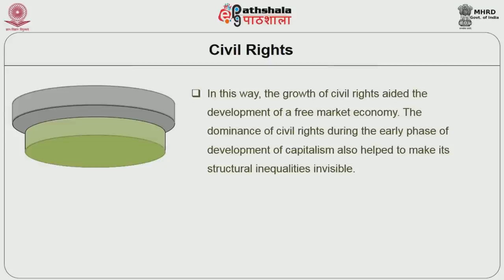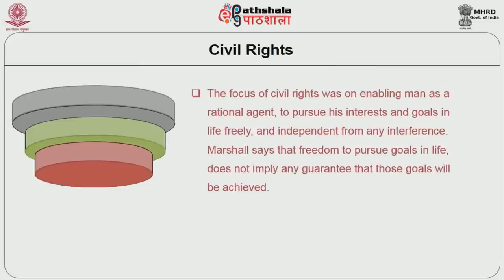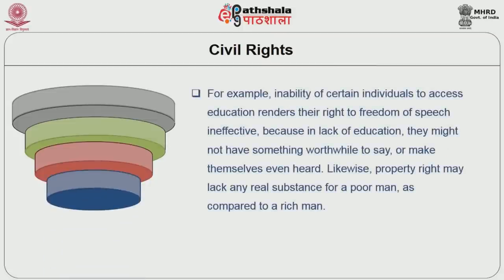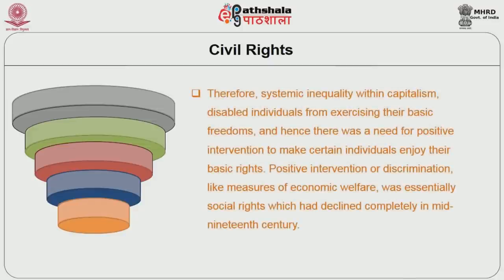In this way, the growth of civil rights aided the development of a free market economy. The dominance of civil rights during the early phase of development of capitalism also helped to make its structural inequalities invisible. The focus on civil rights was enabling man as a rational agent to pursue his interests and goals in life freely and independent from any interference. Marshall says that freedom to pursue goals in life doesn't imply any guarantee that those goals will be achieved. For example, the inability of certain individuals to access the freedom of speech, because lacking education, they might not have something worthwhile to say or make themselves heard. Likewise, property rights may lack any real substance for a poor man as compared to a rich man. Therefore, systemic inequality within capitalism disabled individuals from exercising their basic freedoms, and hence there was a need for positive intervention to make certain individuals enjoy their basic rights.